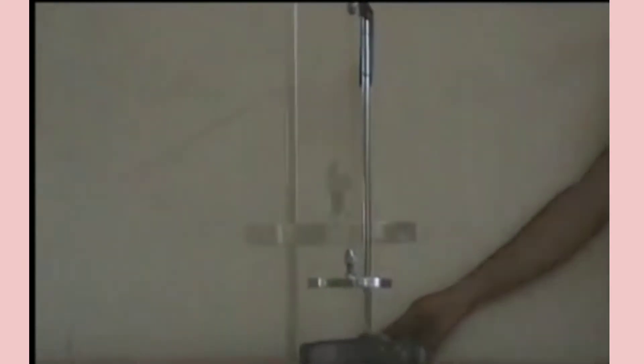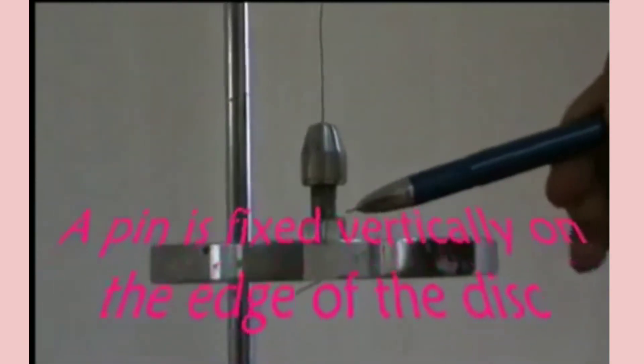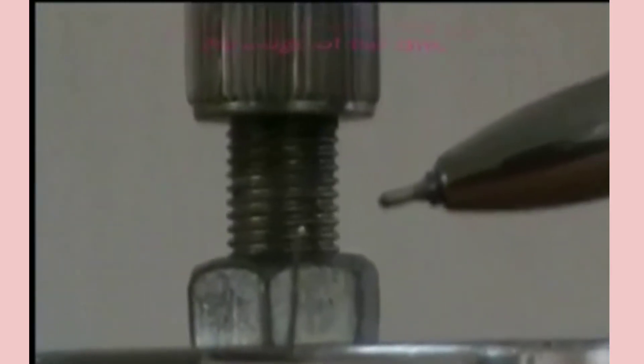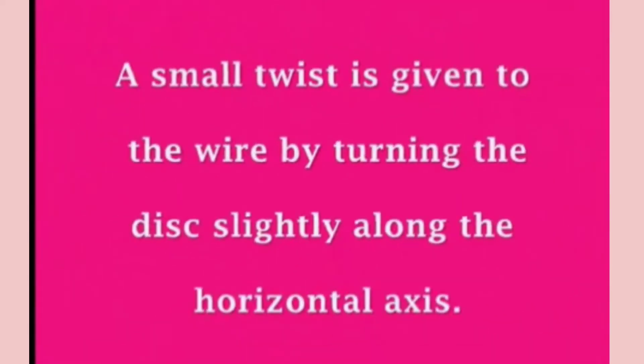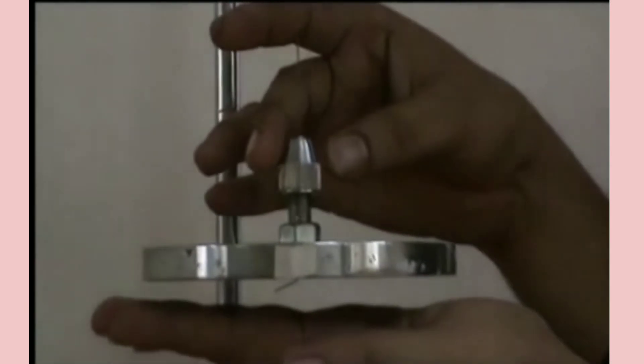A pin is fixed vertically on the edge of the disc for the reference point. Now we have to give a small twist to the wire by turning the disc slightly along the horizontal axis.